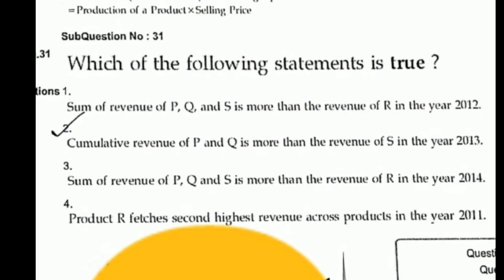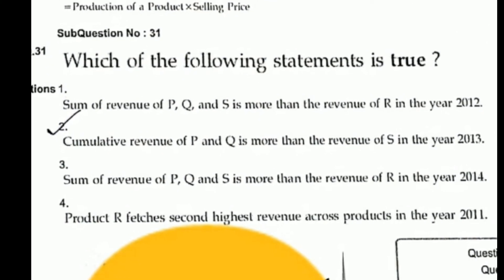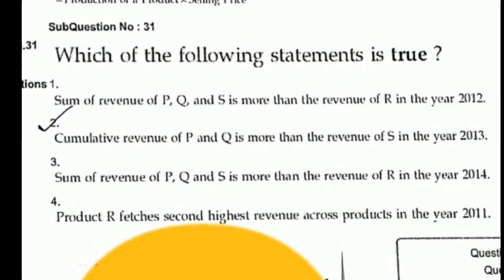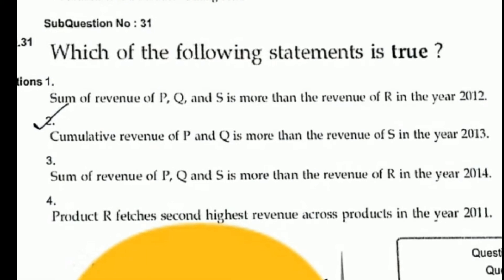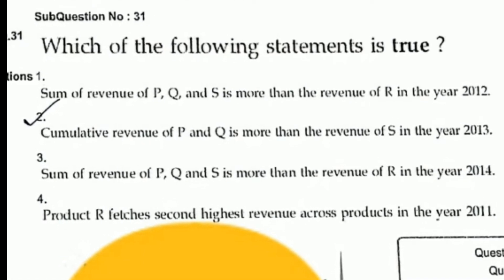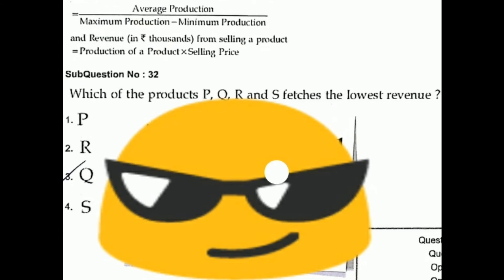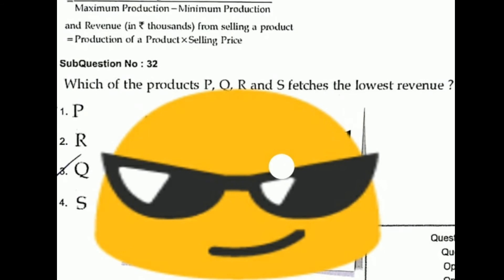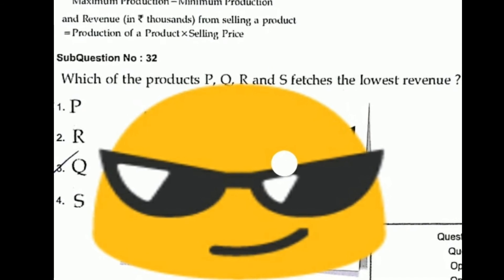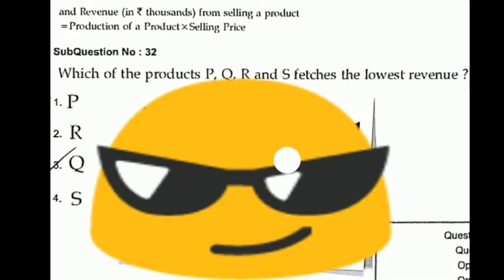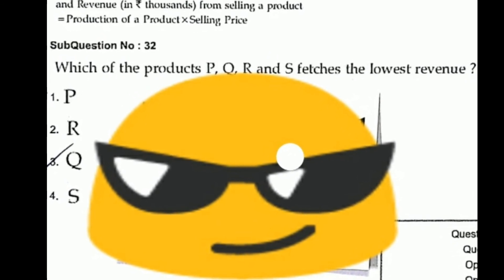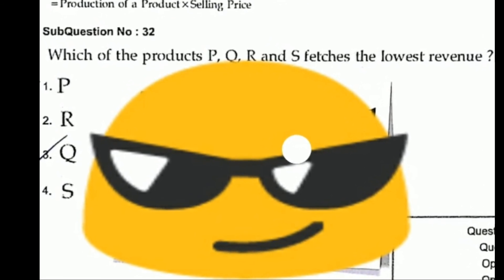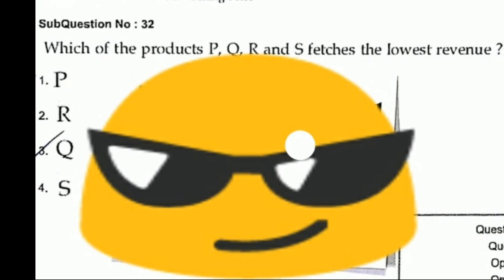Question 31: which of the following statements are true — option two, P and Q is more than. Questions 32: P, Q, R and S features — the lowest revenue option is right answer Q number three.